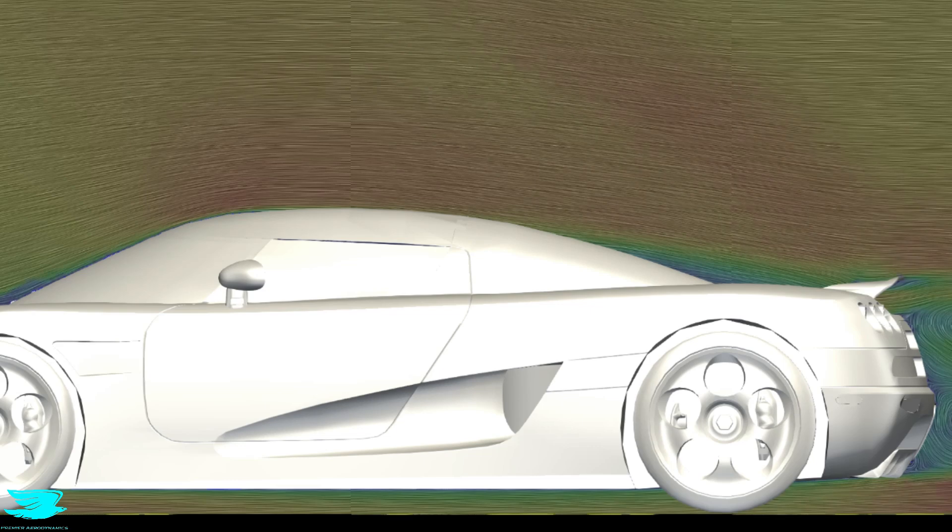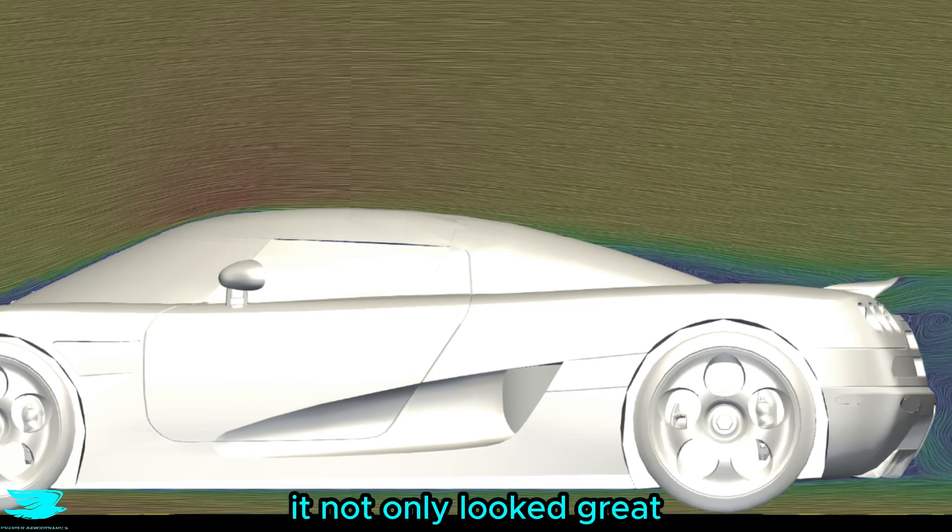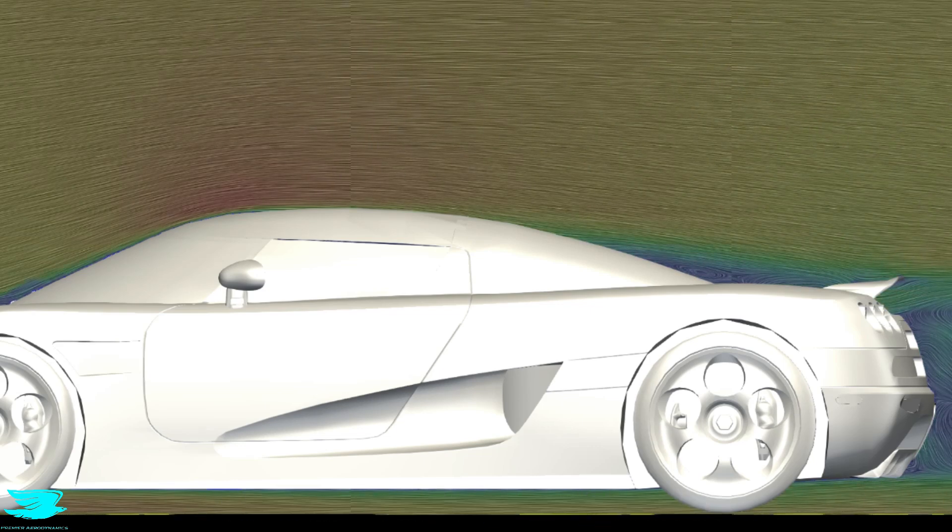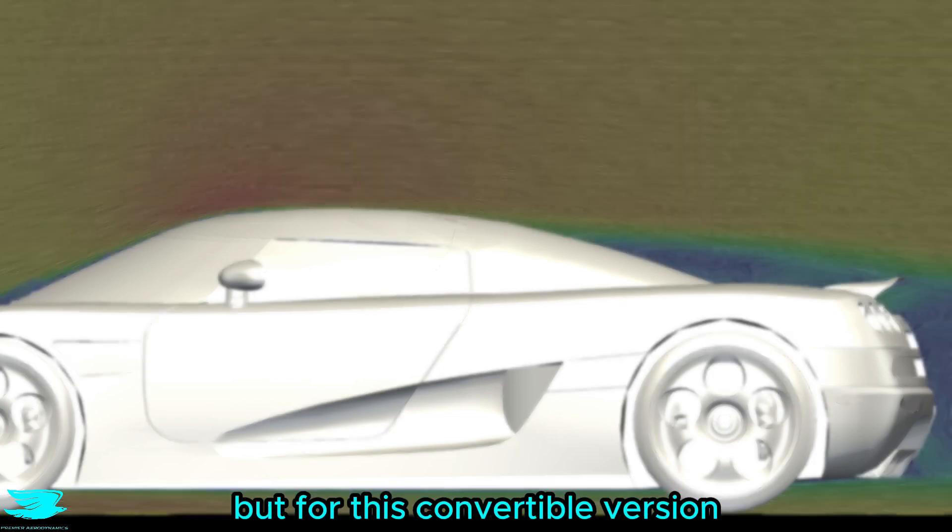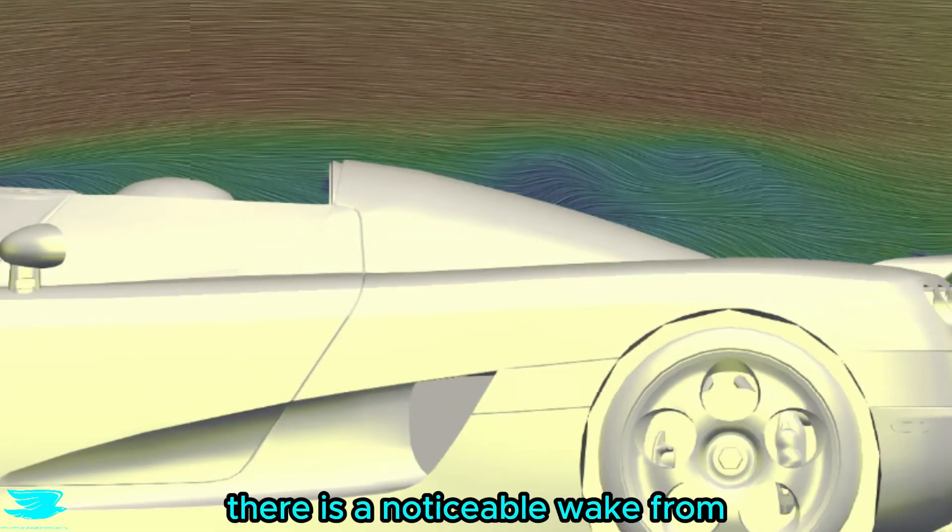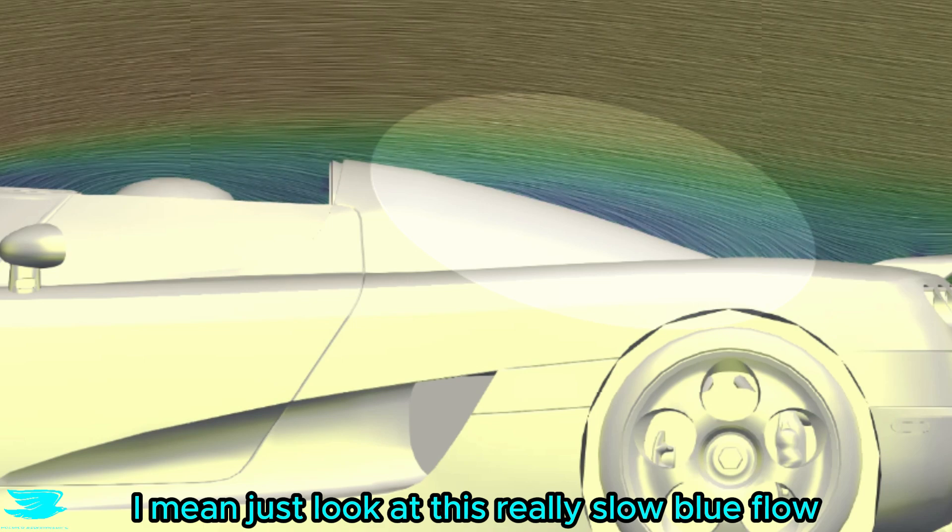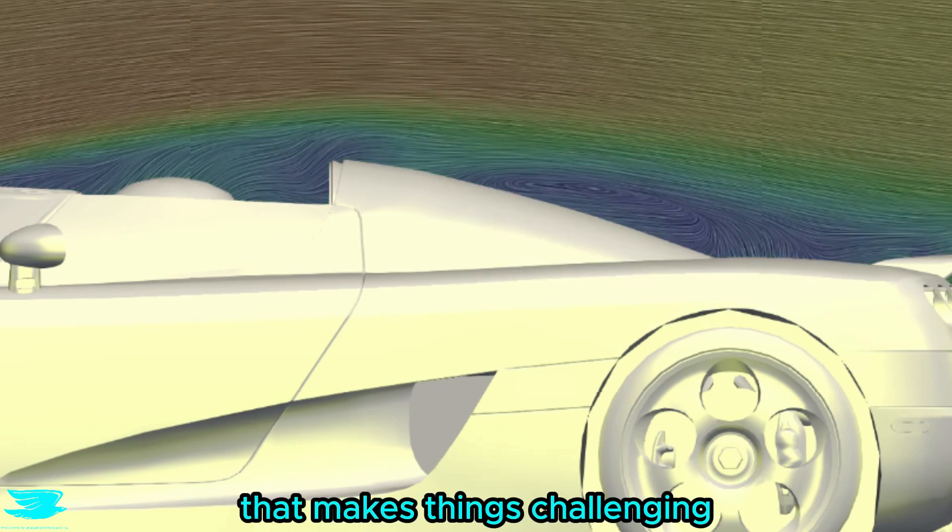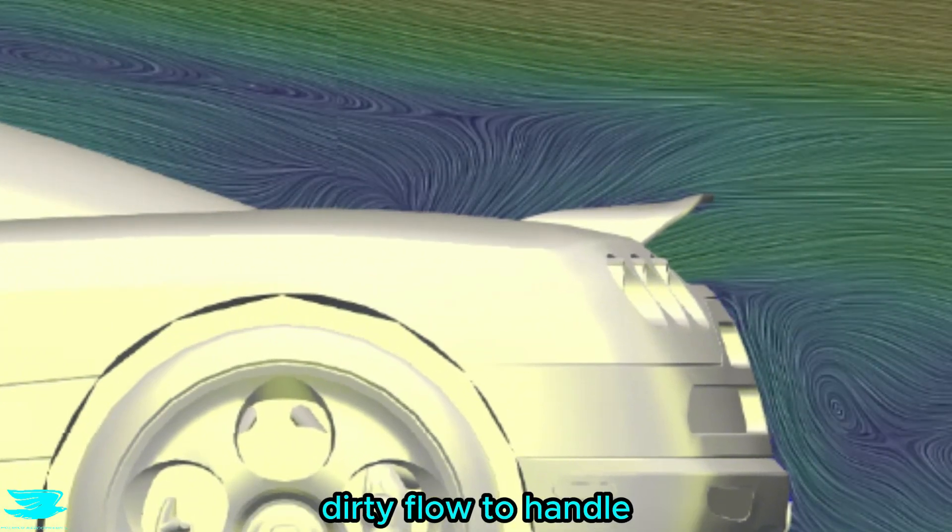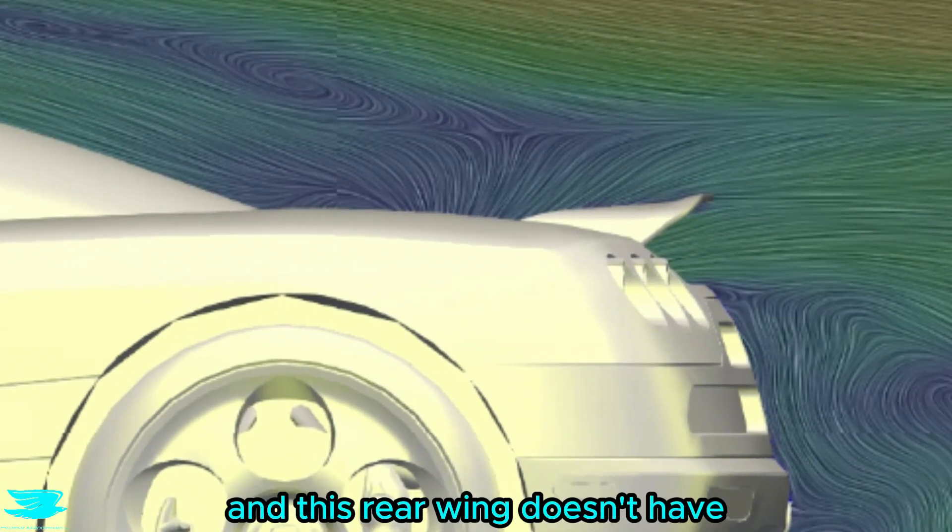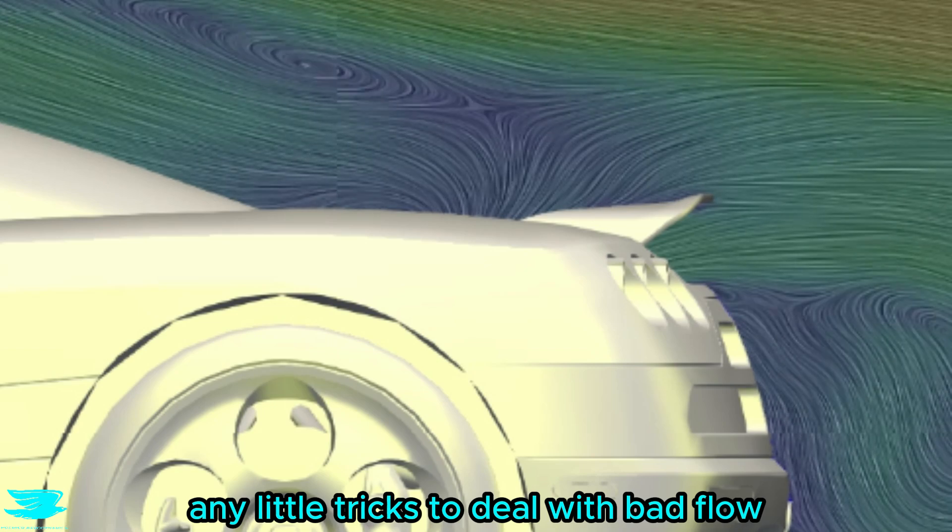For the roofed CCX, the roof was awesome because it not only looked great, it was also very aerodynamic with almost nothing to be sad about. But for this convertible version there is a noticeable wake from the rest of the car. I mean, just look at this really slow blue flow just behind their cabin. That makes things challenging for the rear wing because now it has so much dirty flow to handle, and this rear wing doesn't have any little tricks to deal with bad flow.